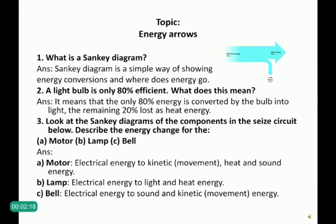For the lamp, electrical energy is converted to light and heat energy, because the bulb produces heat as well. For the third component, the bell: the bell converts electrical energy to sound and kinetic movement energy. When the bell rings, it produces both sound energy and kinetic energy.